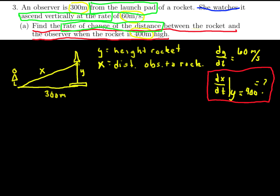We've organized all the facts from the problem into variables and relationships. However, we don't have a relationship yet between x and y. But the picture is strongly suggestive — we have a right triangle. So we know that y² + 300² = x². The sum of the squares of the height and the base equals the hypotenuse squared — that's the Pythagorean theorem. So we've related our variables, and our approach will be to use implicit differentiation to solve this related rates problem.